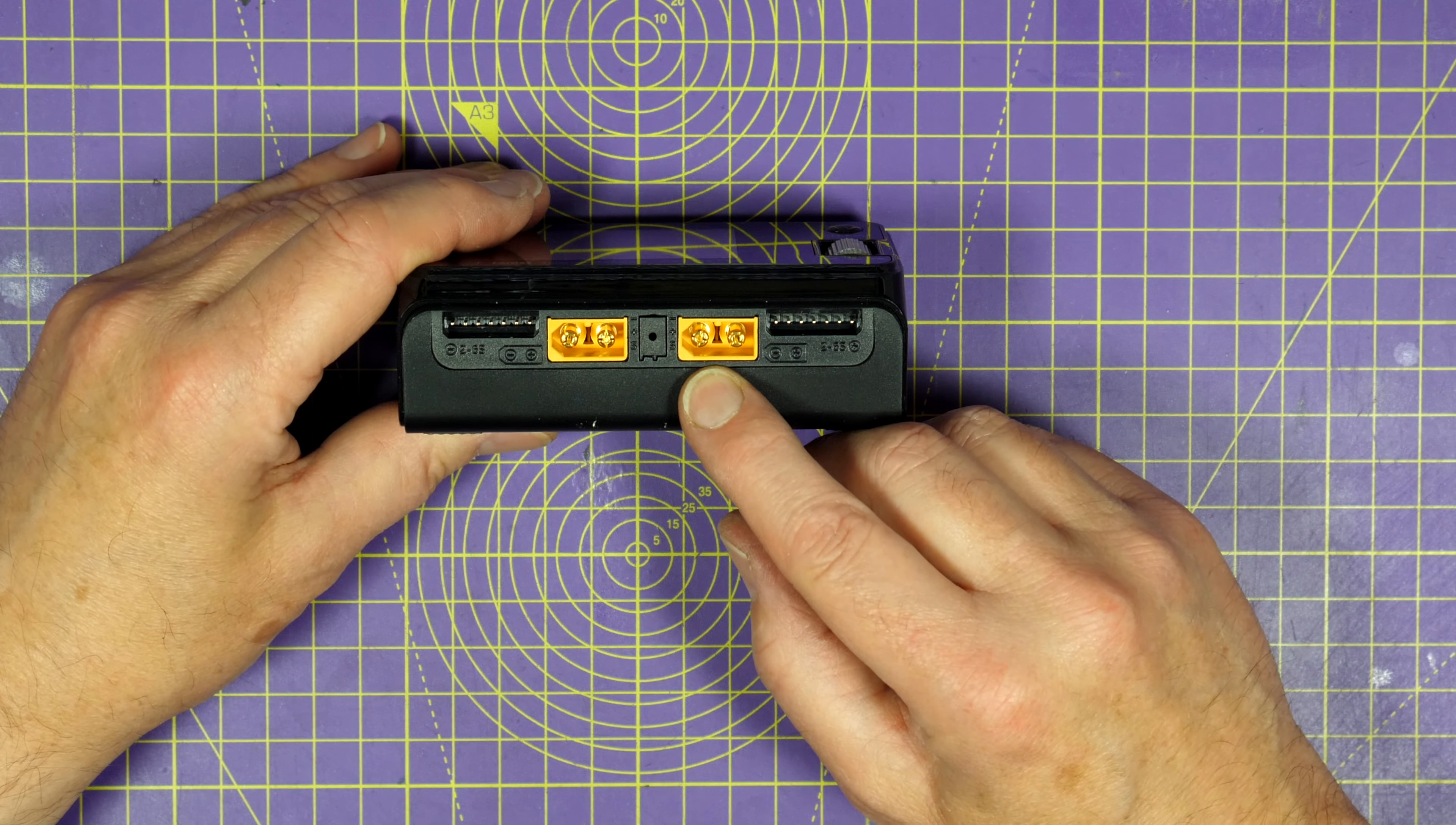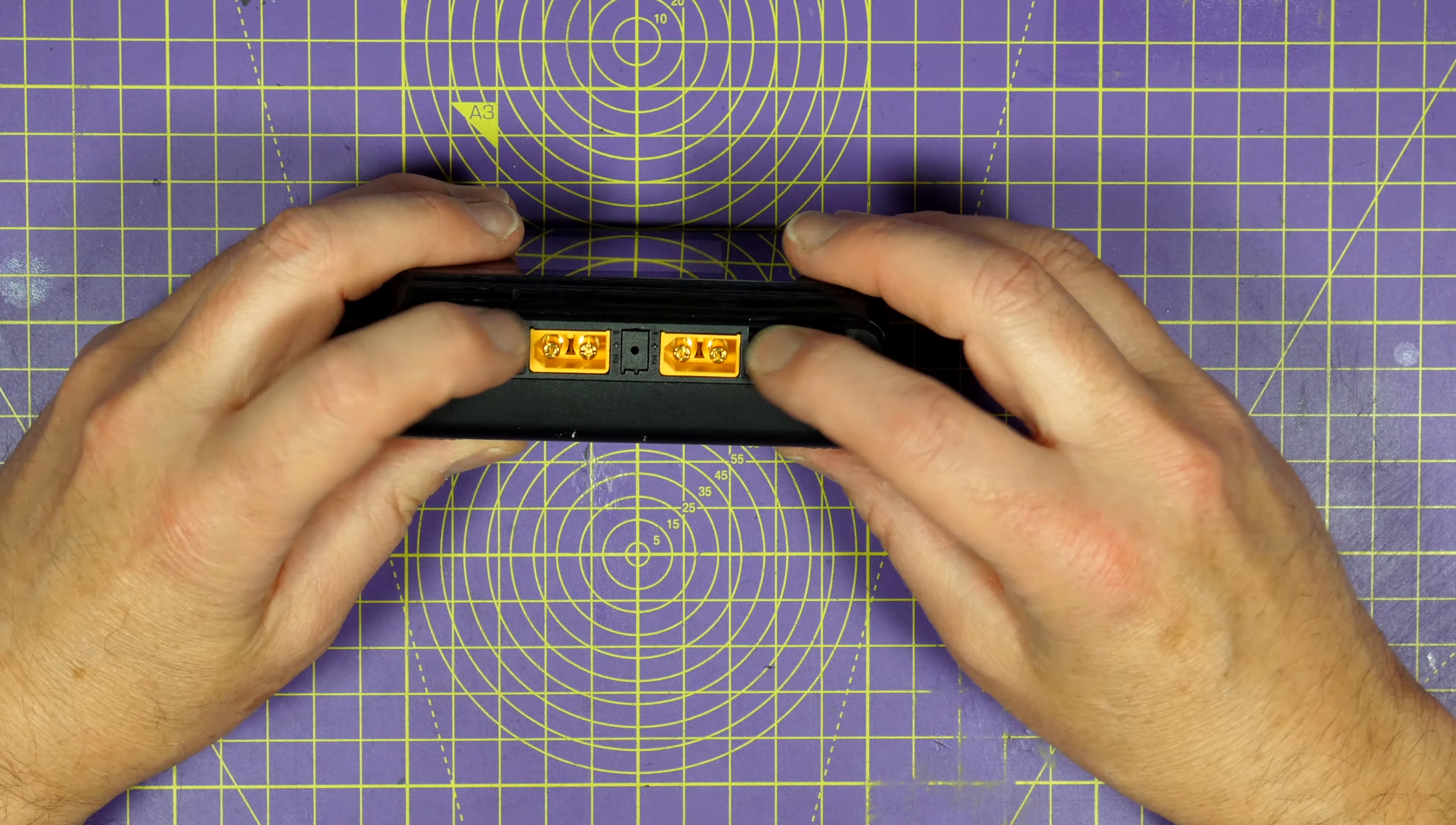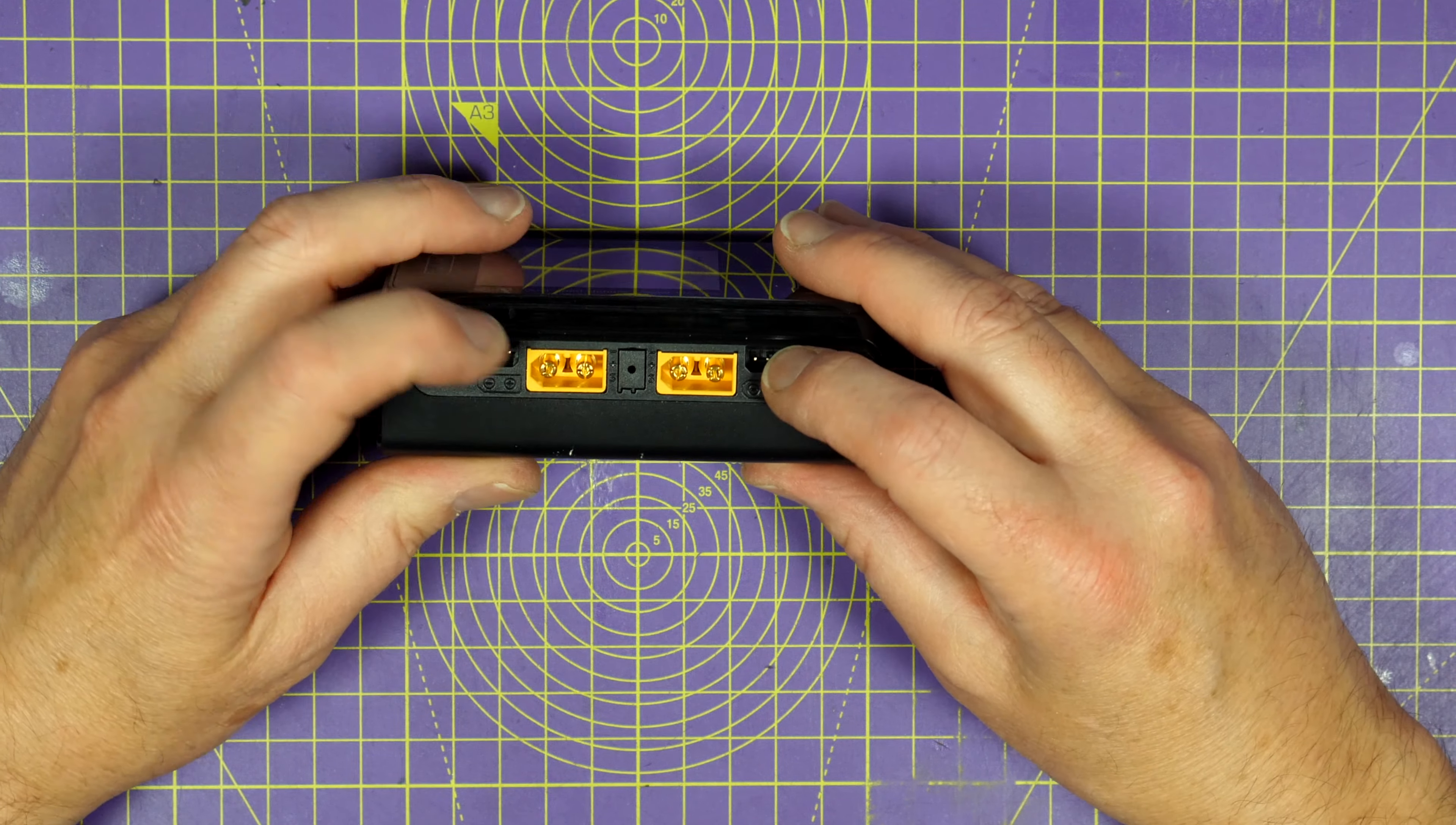On the front here are the dual outputs again XT60 and these are where you plug your balance leads. Seven pins on each so you can charge anything up to 6s on this.